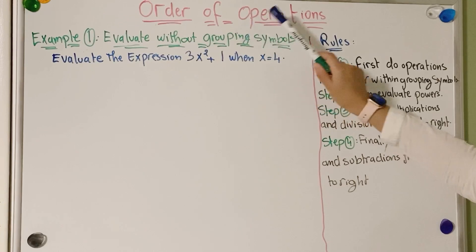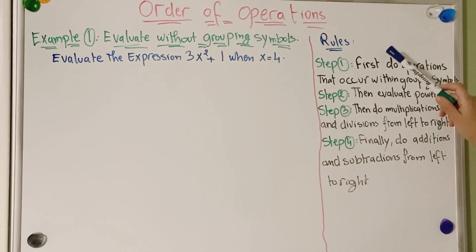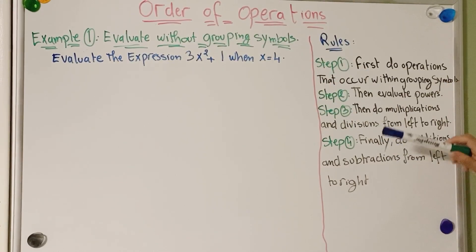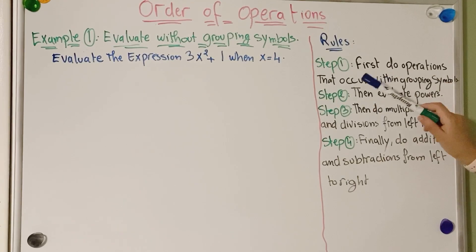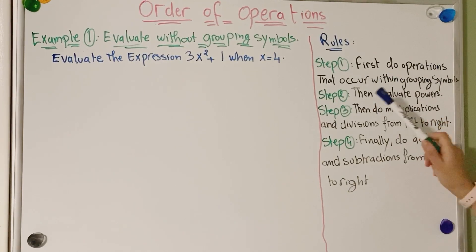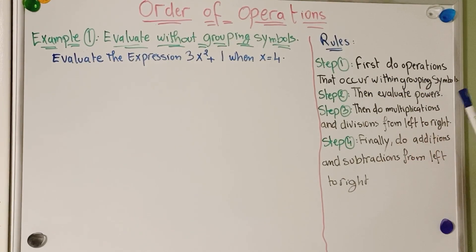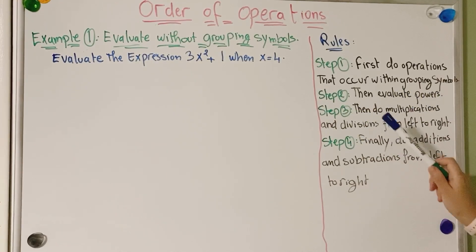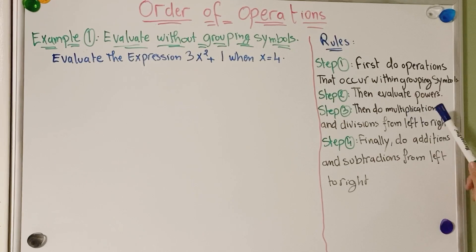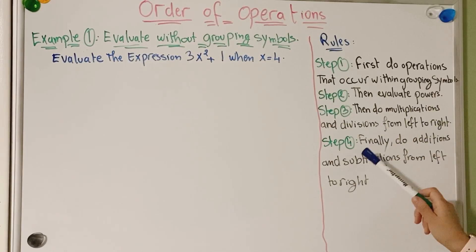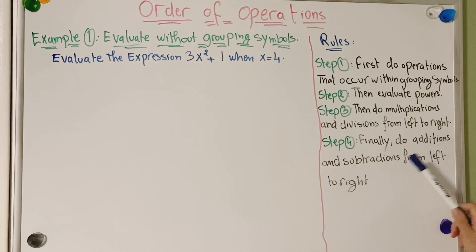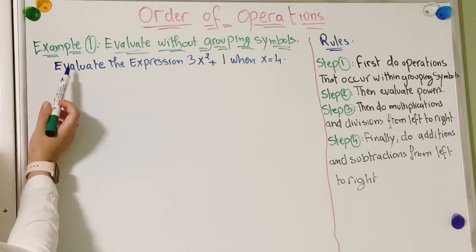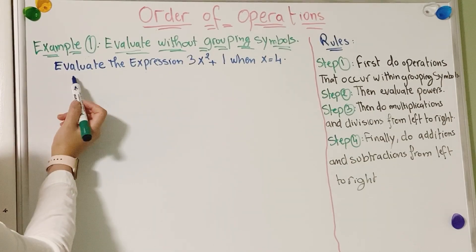Today we're going to learn the order of operations. Here are the rules we follow: first, we do operations that occur within grouping symbols. Second, we evaluate powers. Third, we do multiplication and division from left to right. And the last step, we do addition and subtraction from left to right.